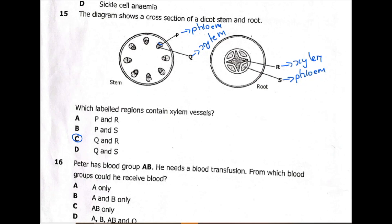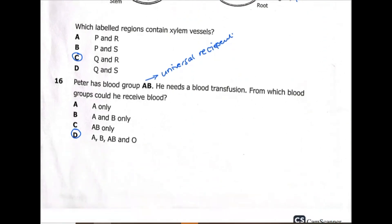Still on question 16: Peter has blood group AB and needs a blood transfusion. From which blood groups could he receive blood? Blood group AB can receive from any of the four blood groups — that is why AB is known as the universal recipient. Since this person has blood group AB, they will receive from all four types. The answer is D — blood groups A, B, AB, and O.